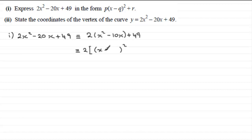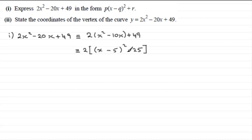Next we complete the square on those two terms. We set up a bracket with x and half the coefficient of x: the coefficient of x is minus 10, so we use minus 5. Expanding (x minus 5) squared gives x squared minus 10x plus 25. We don't want the 25, so we subtract it, giving us x squared minus 10x. Then we have plus 49 on the end.